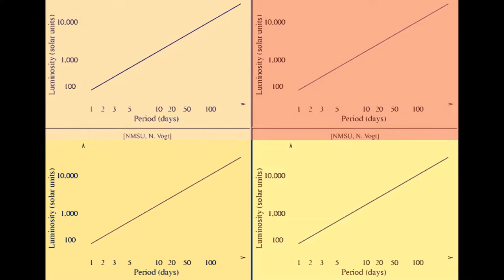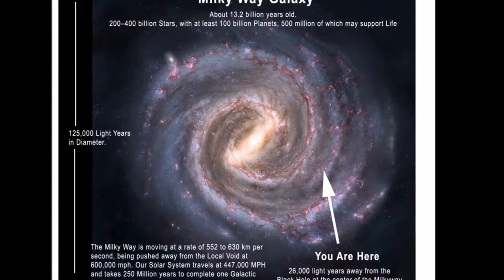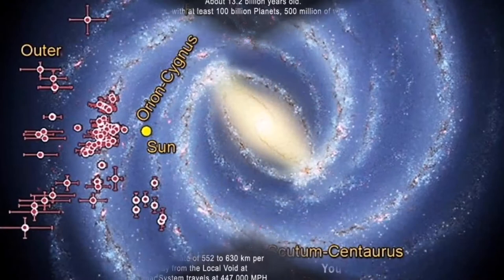Shapley used the period-luminosity relation and parallax method to determine the distances to globular clusters. One of his major findings was the overall dimensions of the Milky Way, which were much greater than previously thought.